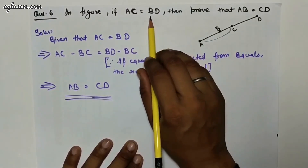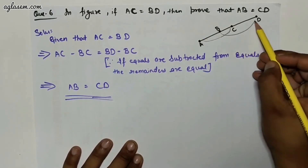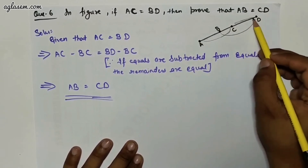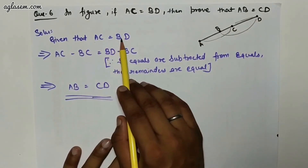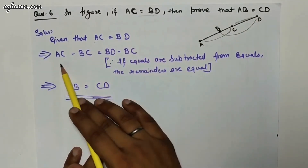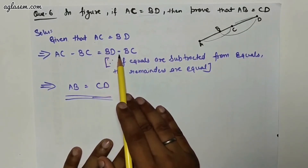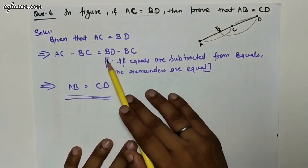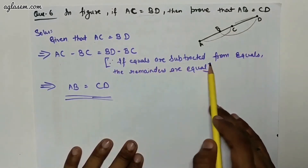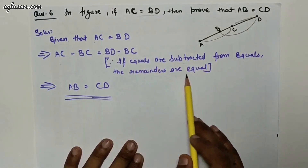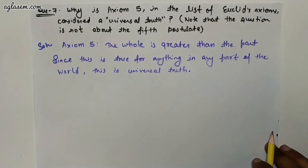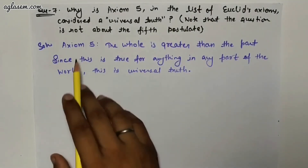Question number six: in the figure, if AC equals BD, then prove that AB equals CD. Given AC equals BD, subtracting BC from both sides: AC minus BC equals BD minus BC. Because if equals are subtracted from equals, the remainders are equal, so AB equals CD. Hence proved.